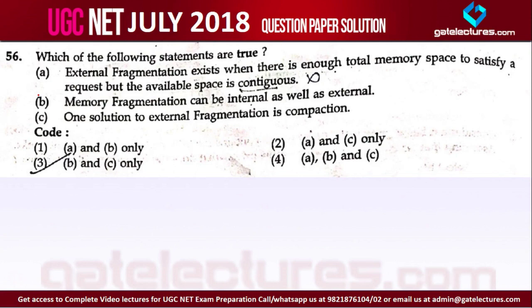Question number 56. Which of the following statements are true? Statement A: External fragmentation exists when there is enough total memory space to satisfy a request but the available space is contiguous. This statement is false.